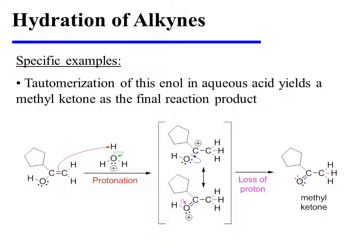The Markovnikov enol tautomerizes in the presence of the acid used for this reaction. The remaining pi bond is protonated, and in the process we form the only possible resonance-stabilized carbocation. As that carbocation is resonance stabilized, we see a resonance structure in which all atoms bear a complete octet, and this is therefore the major resonance contributor to the hybrid. Loss of a proton from this major resonance contributor yields the methyl ketone product.